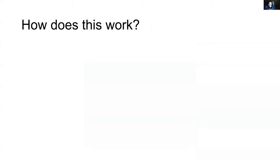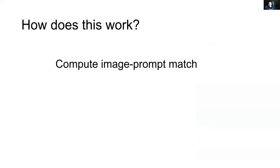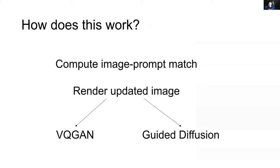So how does this actually work? It really seems like magic, but it's actually surprisingly simple — really just two steps. First, you compute the match between the current image the computer produced and the text prompt you specified as the goal. Then, using that information, you update the image. There are two very common methods used at the moment: one is called VQGAN and the other is called guided diffusion. I'll talk about both of those, as well as computing the image-to-text match.